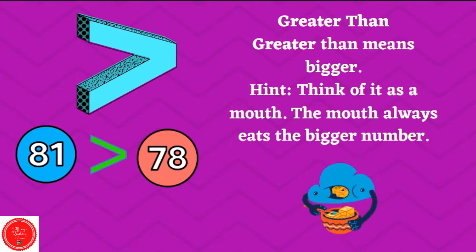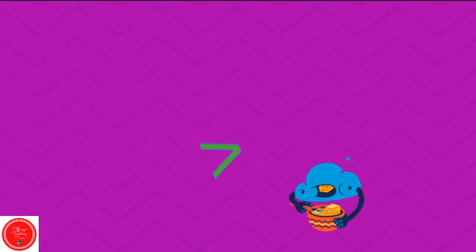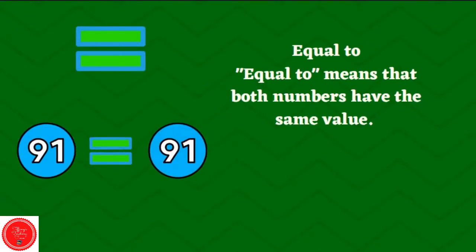81 is greater than 78. 81 is bigger, so that's the number the mouth wants to eat. Then we have equal to. Equal to means that both numbers have the same value. 91 is equal to 91.